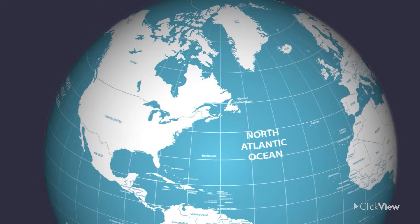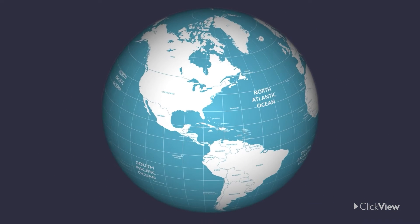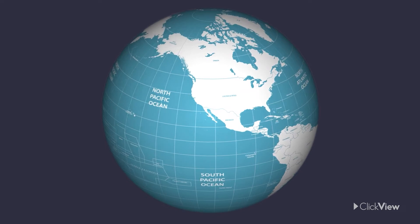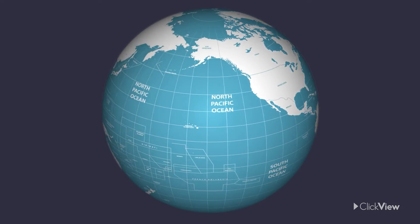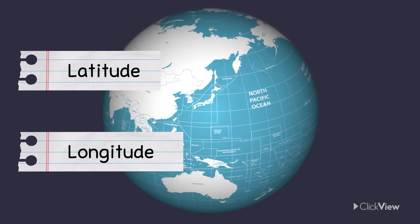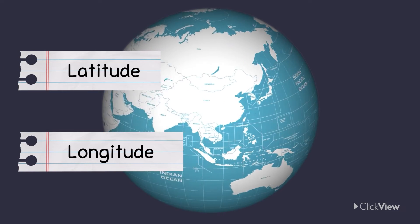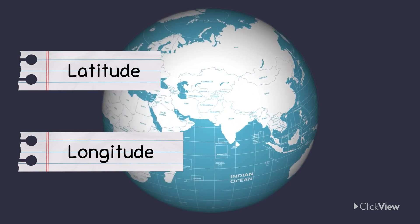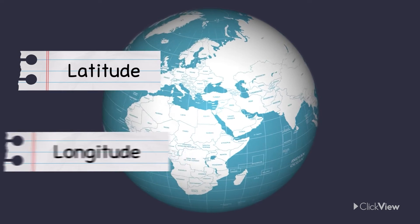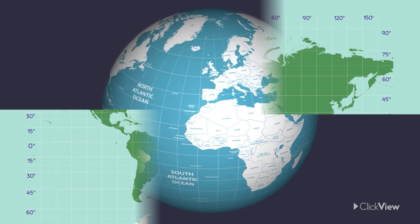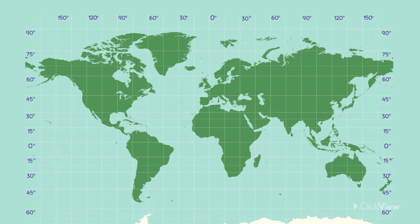To describe more specific locations, we can use the lines of latitude and longitude. These imaginary lines cover the world like a grid. Absolute location is measured in degrees of latitude and longitude.